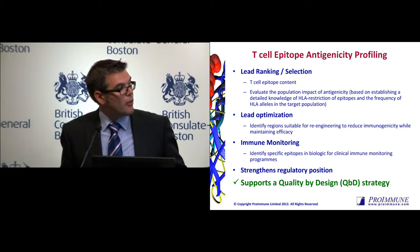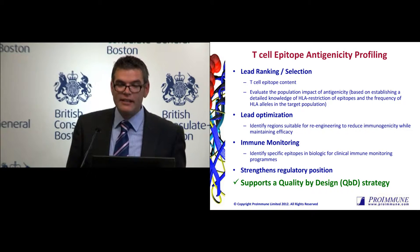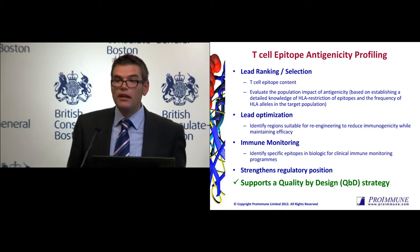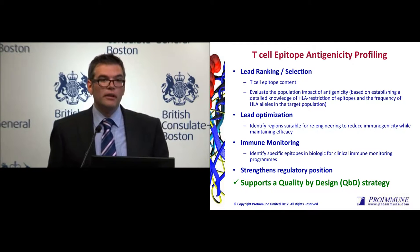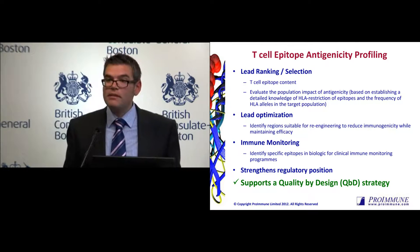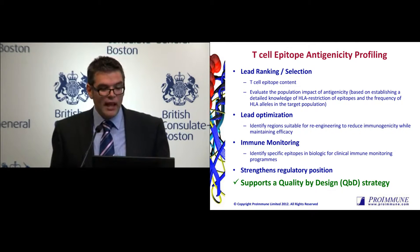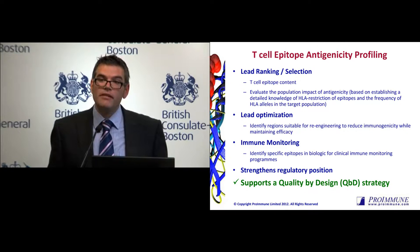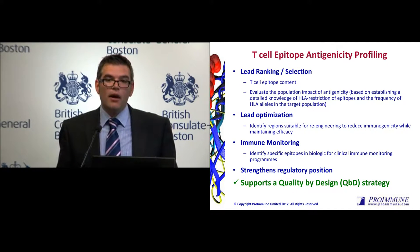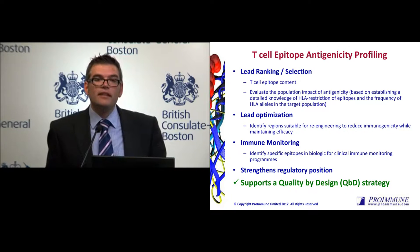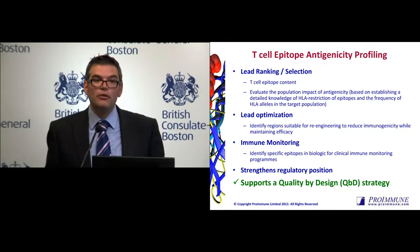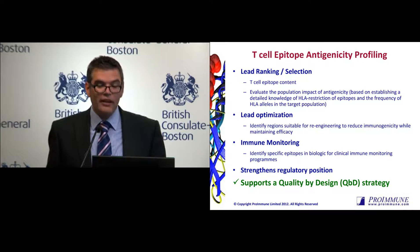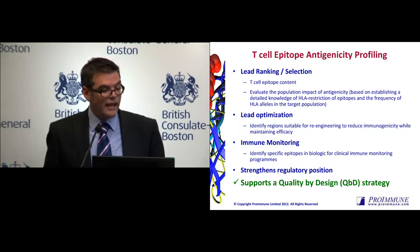What's the population impact of these T-cell epitopes? In many therapeutic areas, there are associations of HLA types. In autoimmunity, for example, specific HLA types are associated with those patients. If the therapeutic we're developing unwittingly has epitopes designed into it which bind preferentially to those HLA types, then we're increasing the risks of unwanted immune responses. That's just one risk factor to take into account.